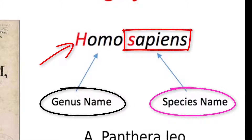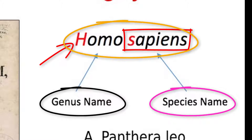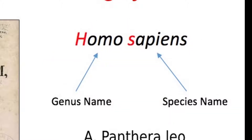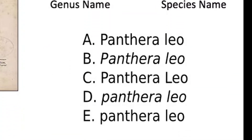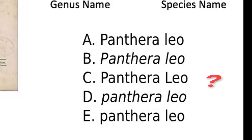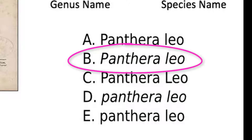If it is being typed, all letters must be italicized, and if it is written, all letters must be underlined. Panthera leo is the scientific name for the African lion. Which version do you think is written correctly? If you picked B, you're correct.